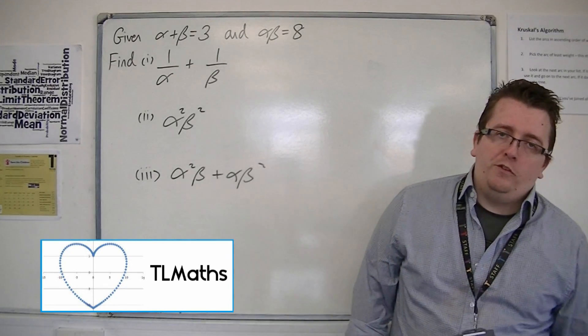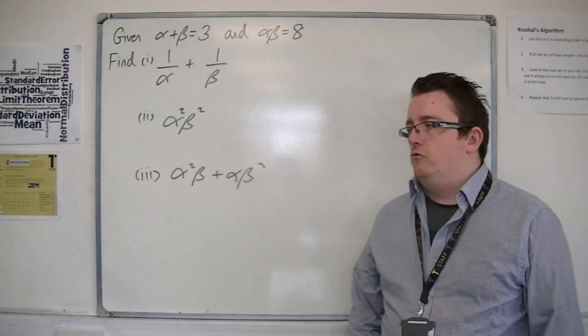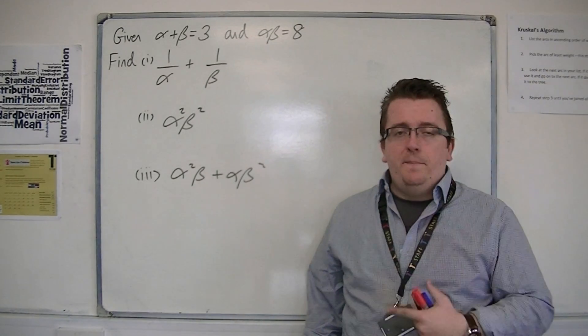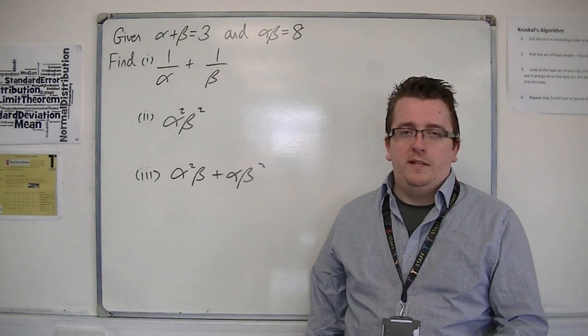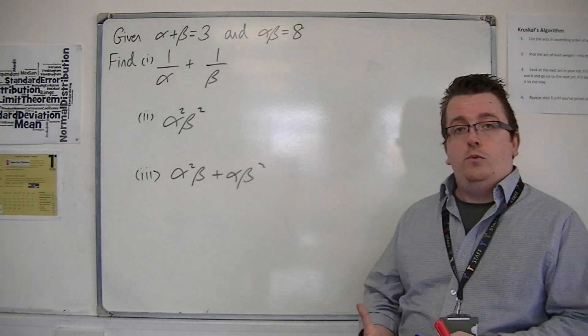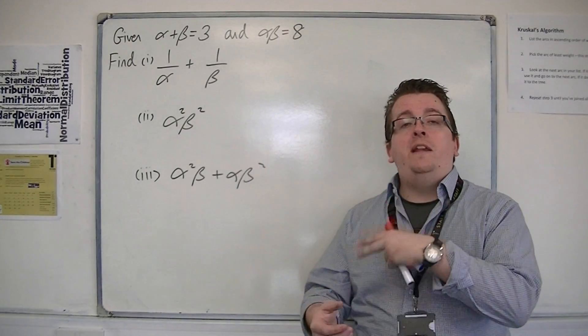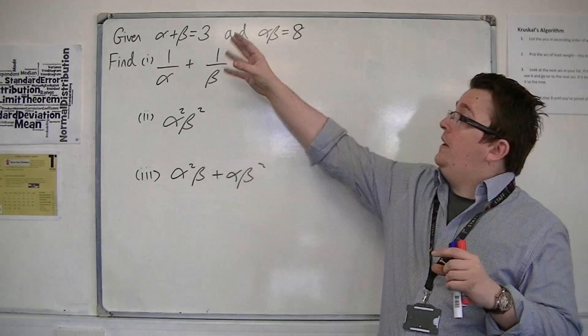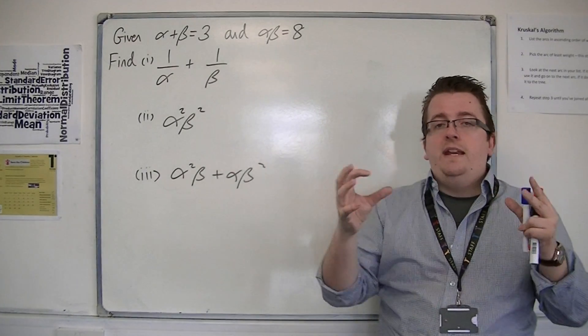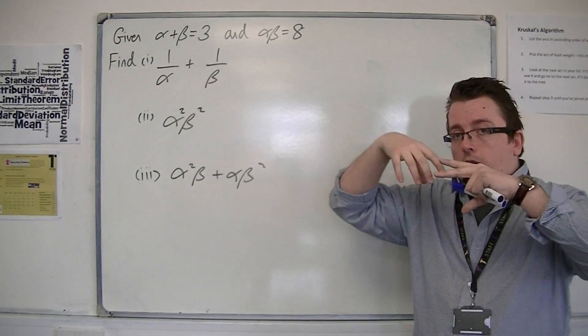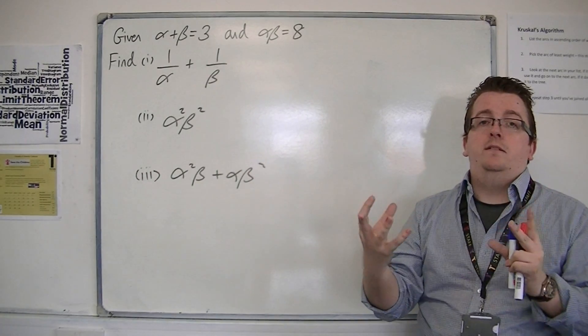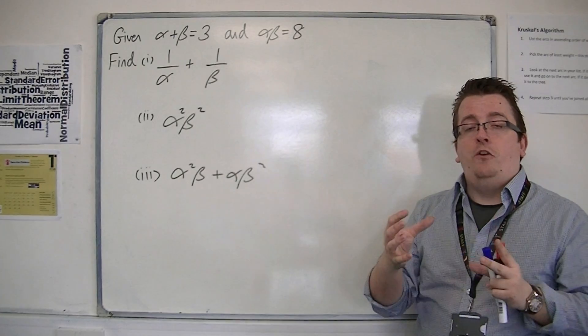As part of this chapter, you're going to have to get used to manipulating expressions of alpha and beta. What you want to be doing is getting things into the form of alpha plus beta and alpha beta. They are the things that you know, the things that are given. So you need to try and manipulate your way to getting multiples of alpha plus beta and alpha beta so that you can then substitute those values in.